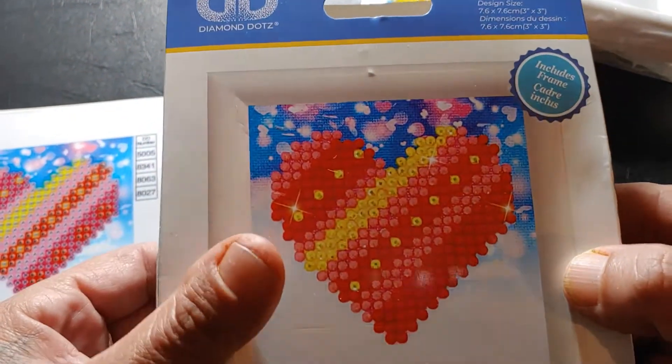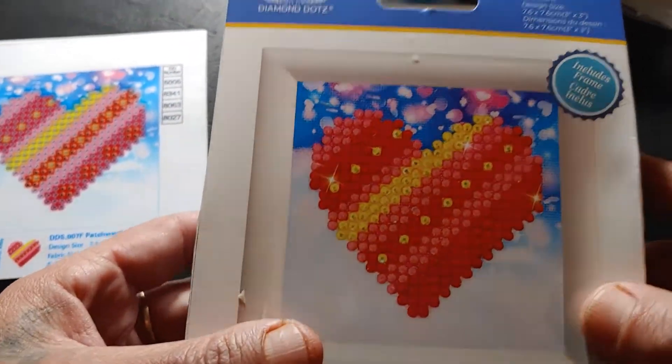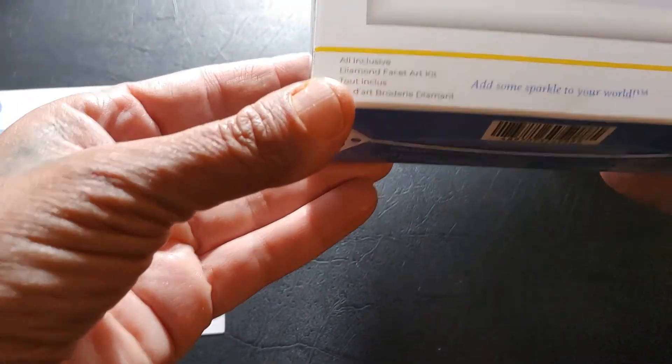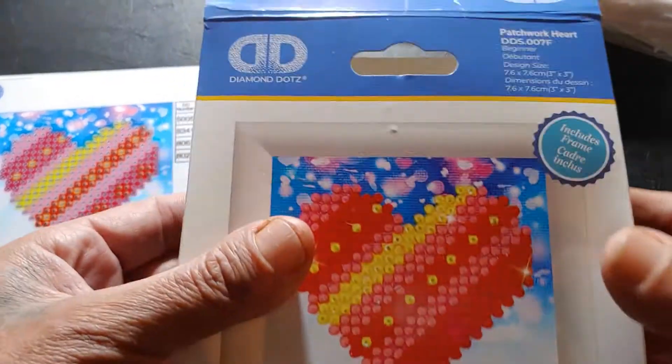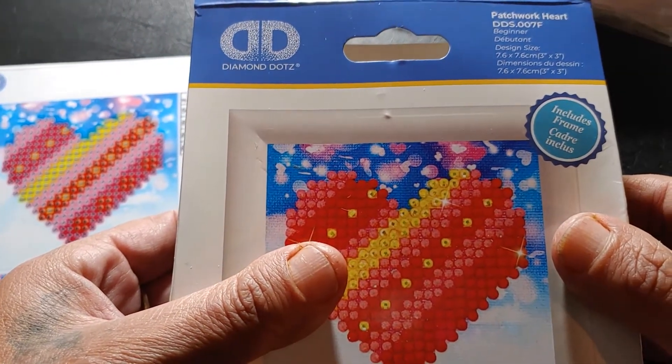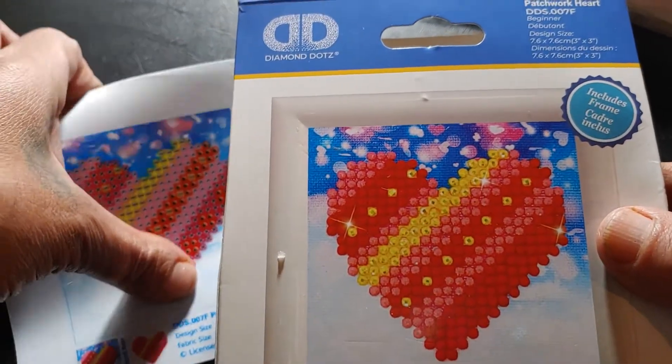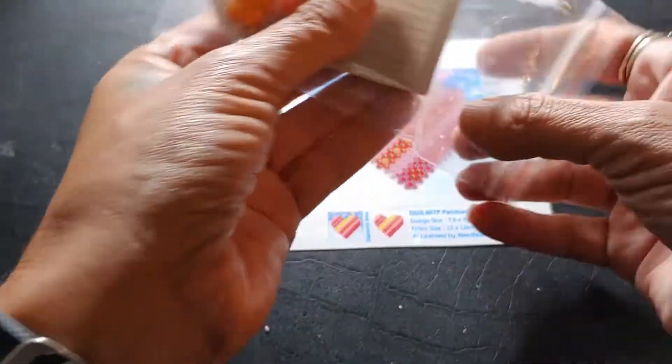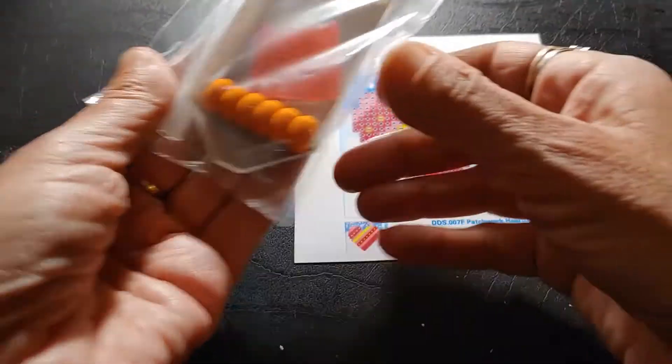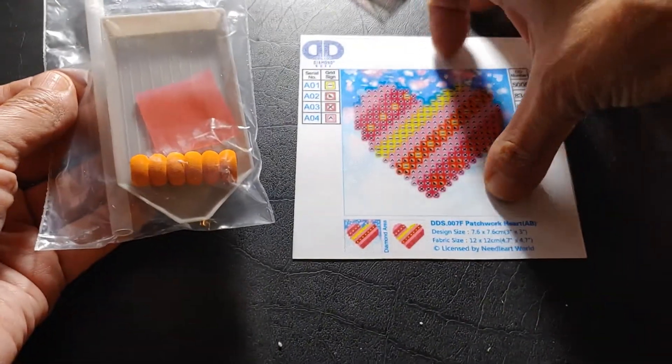This little box includes - it's called Patchwork Heart. It says it includes frame, it's for a beginner. It's very little, like 7.6 by 7.6, so basically a 3 by 3. Don't mind the background, my son is playing Fortnite. The kit includes the canvas.